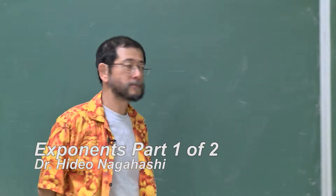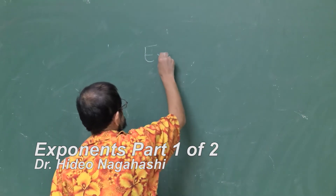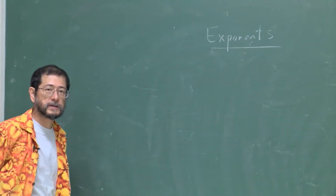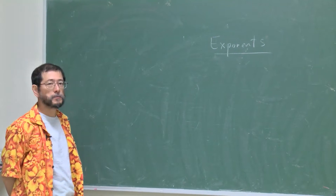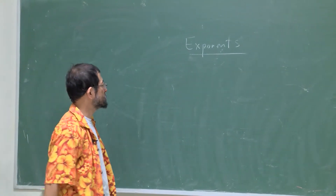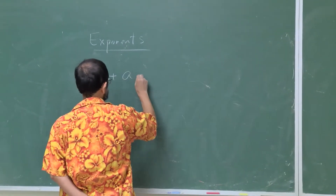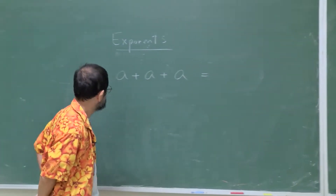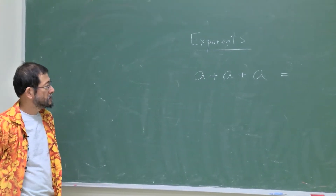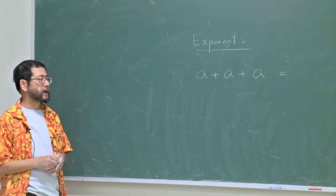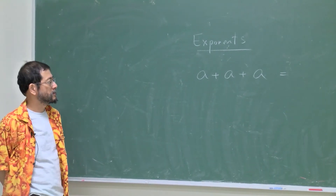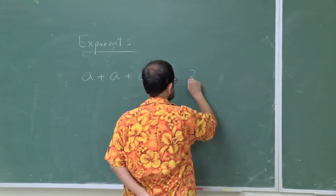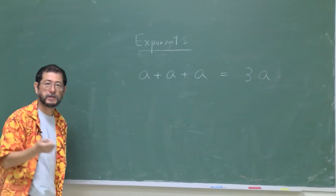Hello. Today I want to talk about exponents. So I'll introduce this concept and then introduce a couple of rules to compute expressions involving exponents. Let me start from this expression: a plus a plus a. So this is only 3 — you add 3 a's — but you don't want to write down a, say, 100 times. So that's why we define this to be a times 3, or 3a.